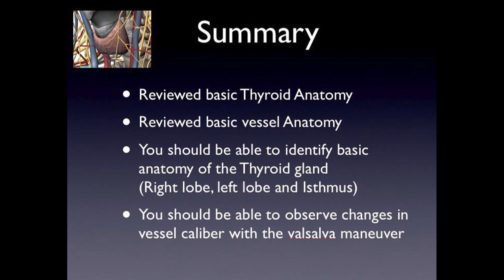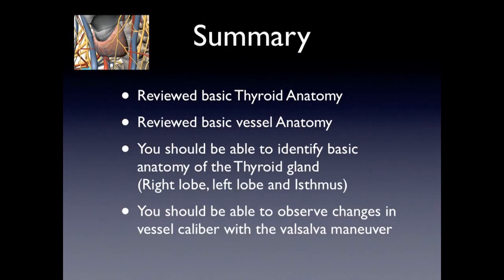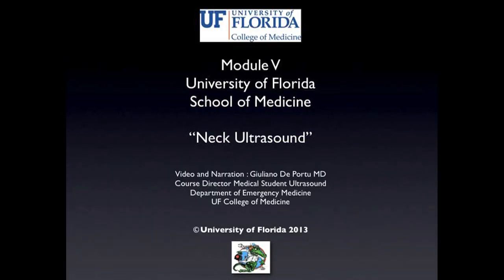We've covered basic thyroid anatomy and some of the vessels that lie next to the thyroid. You should be able to identify those vessels as well as the thyroid structures — right lobe, left lobe, and isthmus — and you should be able to see the changes in the internal jugular with the Valsalva maneuver. That's all for now; we will see you in the lab. Thank you.